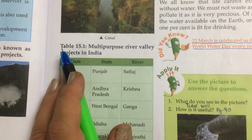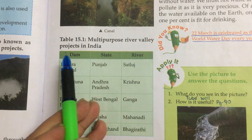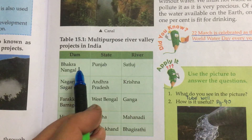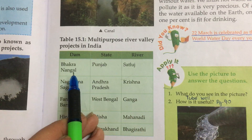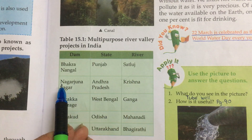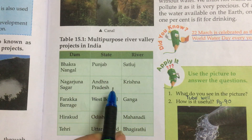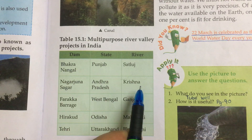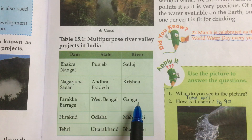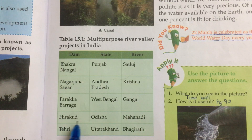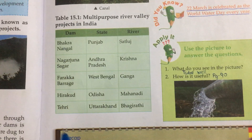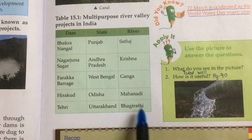For example, the Indira Gandhi Canal, also called the Rajasthan Canal, has been constructed for taking water to the desert areas of Rajasthan. It is the longest irrigation canal in the world. This table talks about multi-purpose river valley projects in India — dam, state and river. Bakra Nangal Dam is in Punjab on the river Sutlej. Nagarjuna Sagar is in Andhra Pradesh on the Krishna River. Farakka Barrage is in West Bengal on the Ganga River. Hirakud is in Odisha on the Mahanadi. And Tehri is in Uttarakhand on the Bhagirathi River.